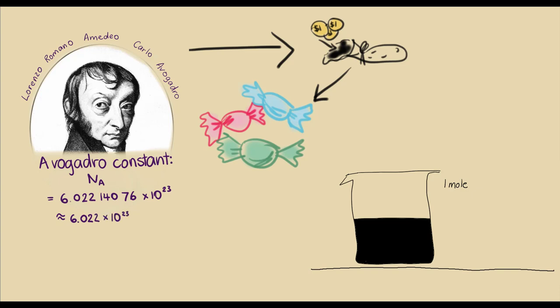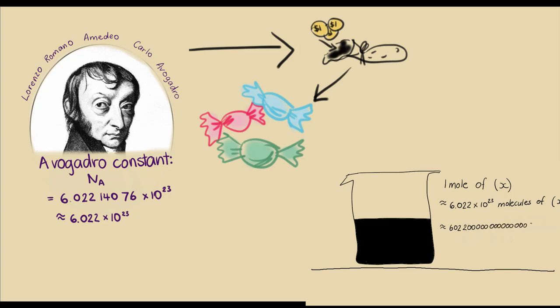So for whatever we're using, whether it's X or glucose, one mole of it is equal to 6.022 times 10 to the 23 molecules, which would also be equal to 6.022 followed by many zeros molecules or particles of X.